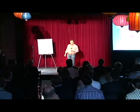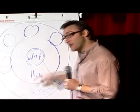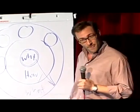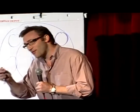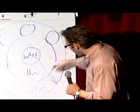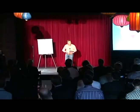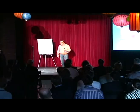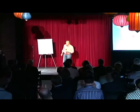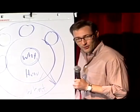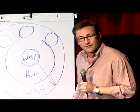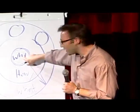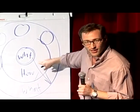In other words, when we communicate from the outside in, yes, people can understand vast amounts of complicated information like features and benefits and facts and figures, it just doesn't drive behavior. When we communicate from the inside out, we're talking directly to the part of the brain that controls behavior, and then we allow people to rationalize it with the tangible things we say and do. This is where gut decisions come from. Sometimes you can give somebody all the facts and figures and they say, I know what all the facts and details say, but it just doesn't feel right. Why would we use that verb? It doesn't feel right. Because the part of the brain that controls decision-making doesn't control language. And the best we can muster up is, I don't know, it just doesn't feel right. Or sometimes you say you're leading with your heart or you're leading with your soul. Well, I hate to break it to you, those aren't other body parts controlling your behavior. It's all happening here in your limbic brain, the part of the brain that controls decision-making and not language.